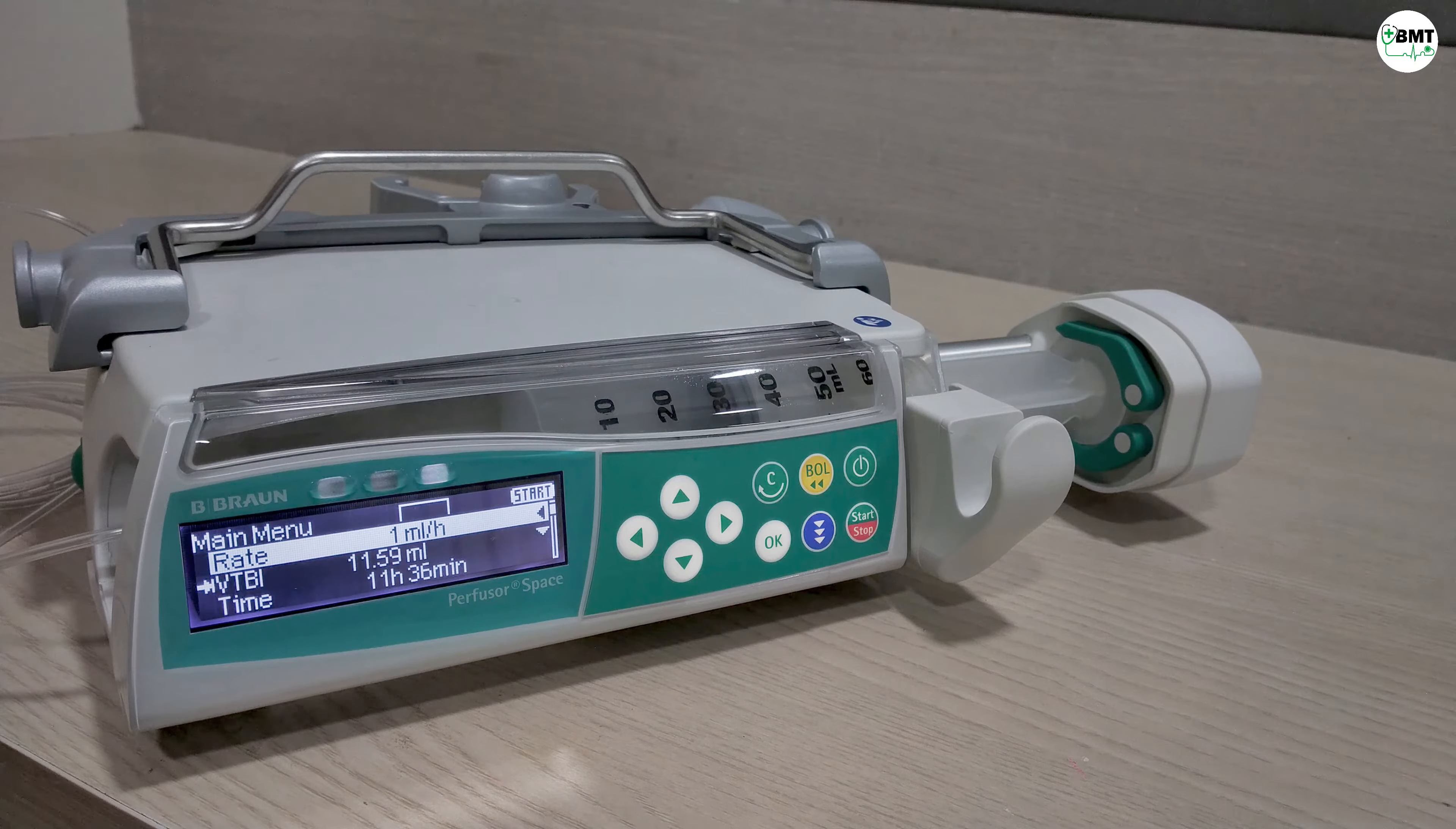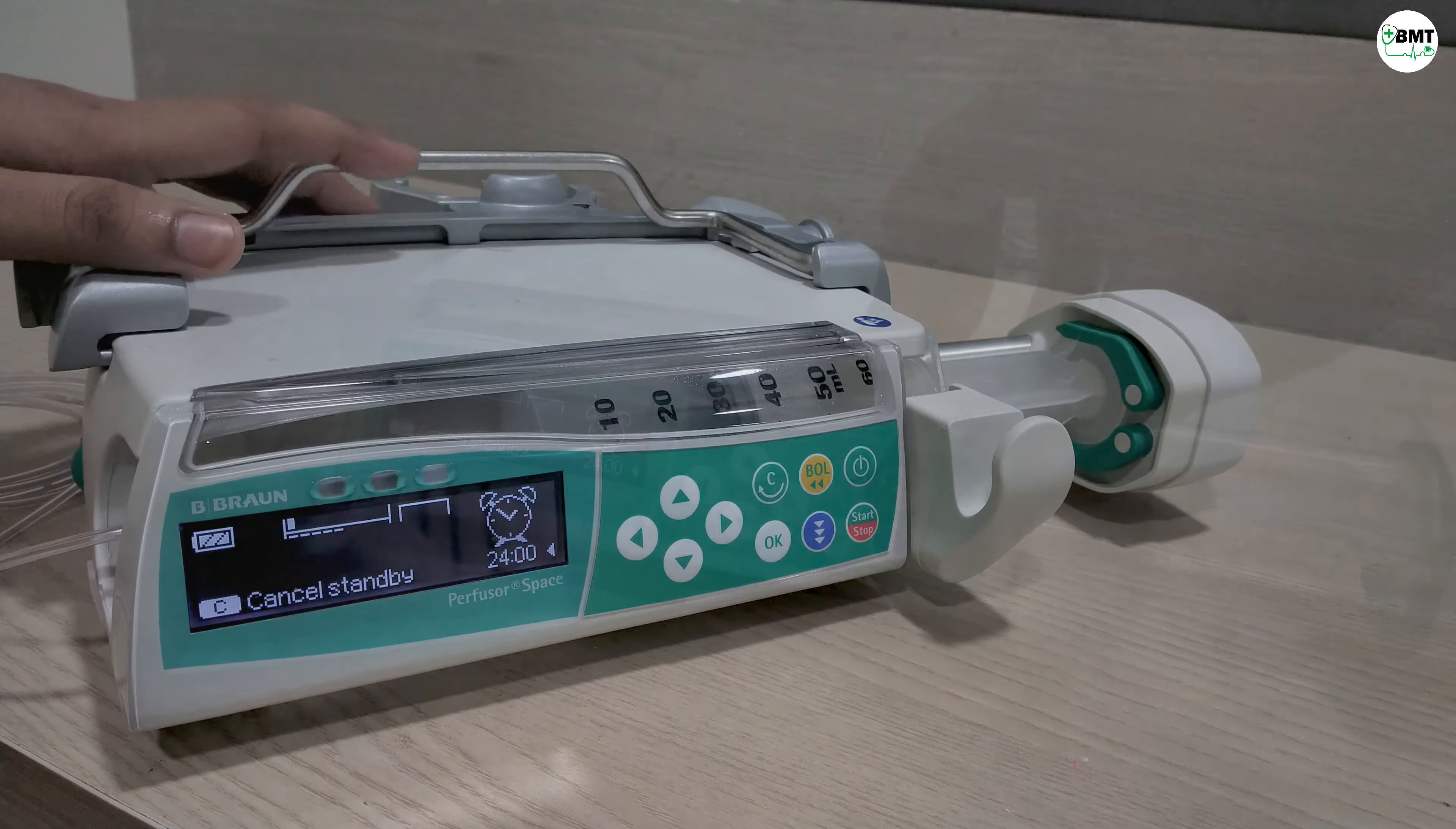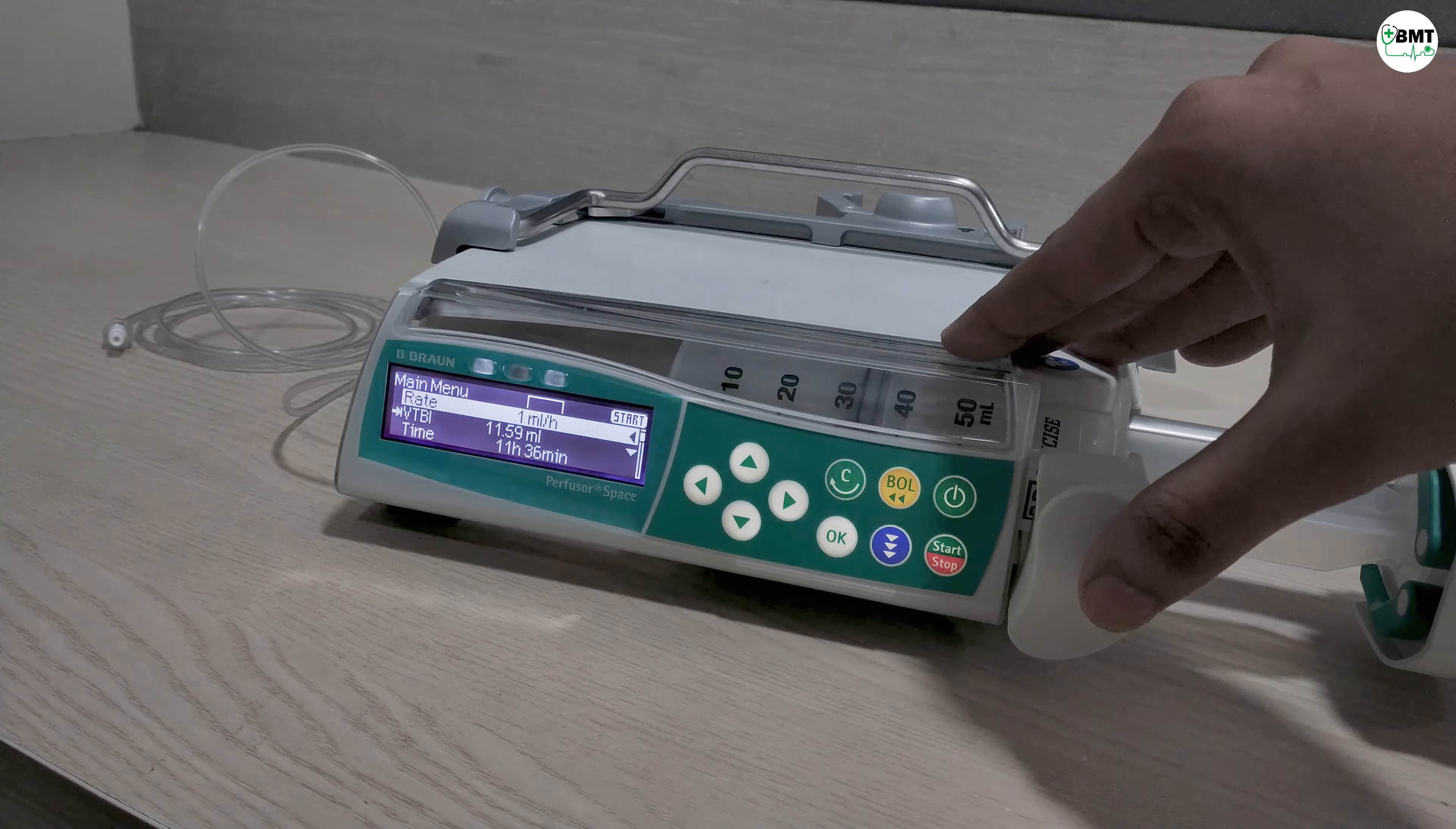If you want to put this syringe pump in standby mode, press the on-off key for 3 seconds. It will go in standby mode. To cancel standby mode, as instructed, press C and then normal screen will appear.